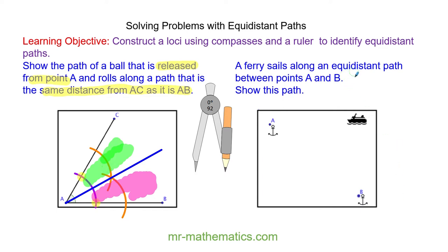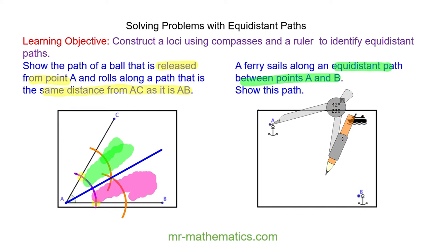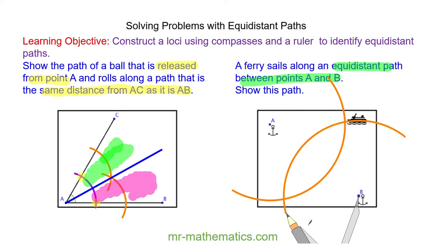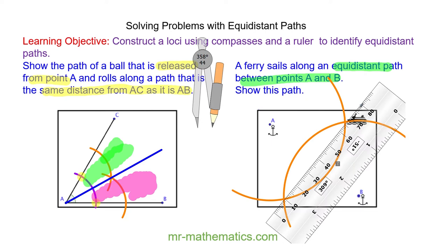A ferry sails along an equidistant path between points A and B. So we're going to construct a perpendicular bisector of line AB, and this will be the equidistant path. I put my compass on point A and open up a radius greater than half the length of AB and draw an arc. Keeping the radius the same, I do the same from point B, and where the two arcs cross I draw a line through the two points.